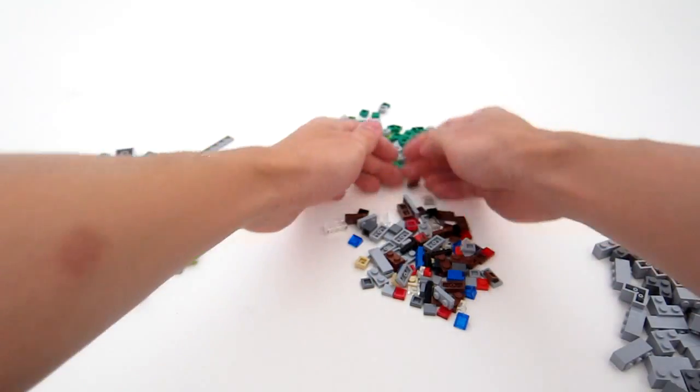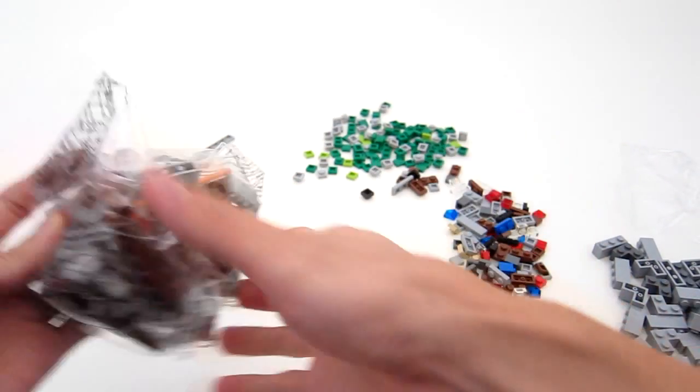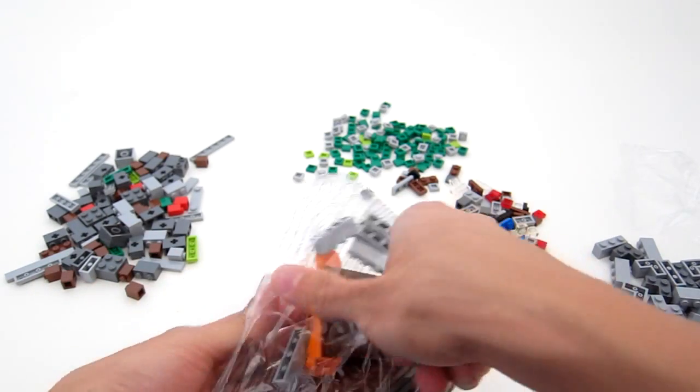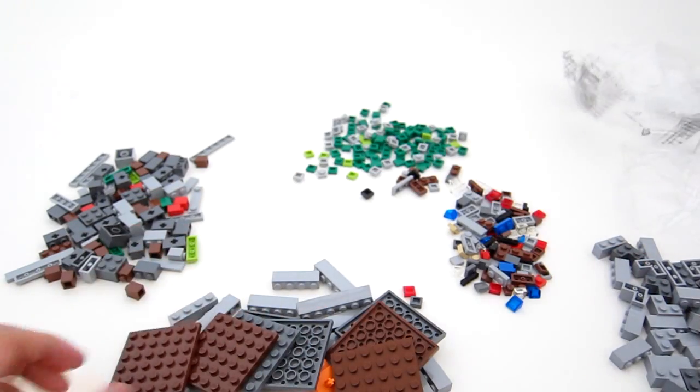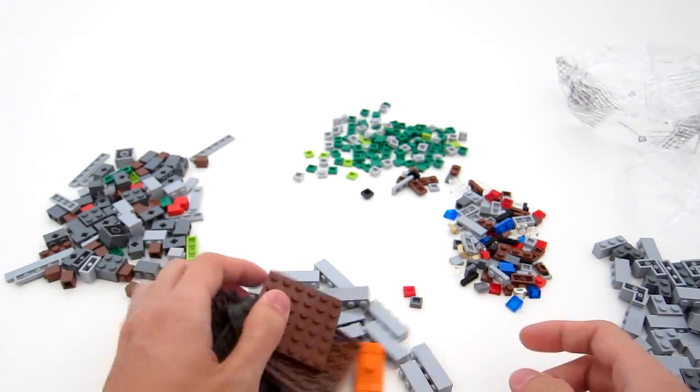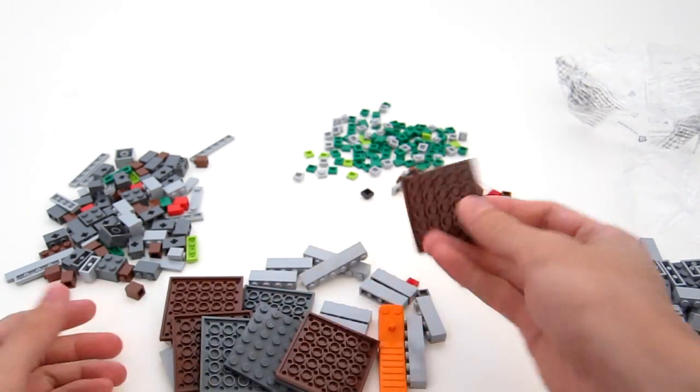So more small parts. Again, I don't see any new bricks in here. So here are the base plates that the model is going to be built on. Again, the largest is a 6x6.